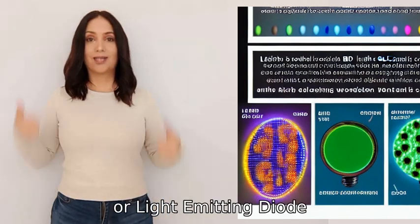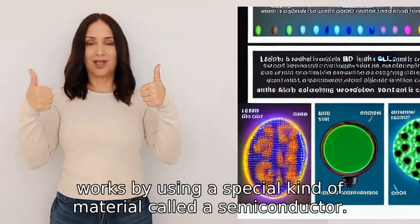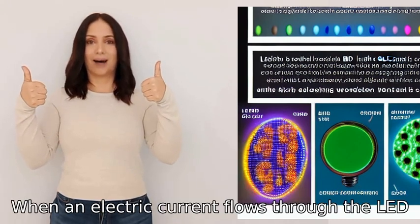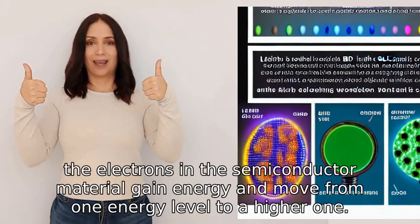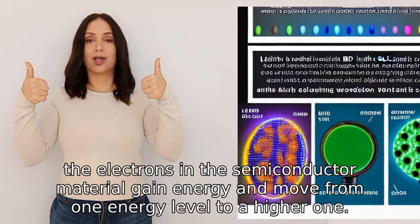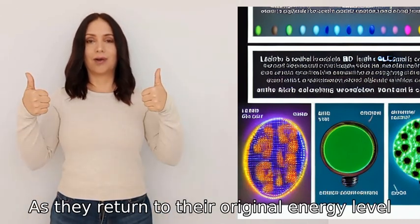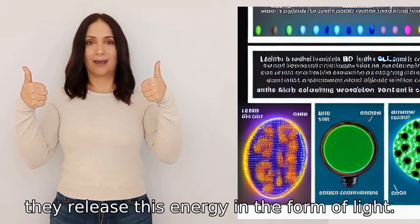An LED, or light emitting diode, works by using a special kind of material called a semiconductor. When an electric current flows through the LED, the electrons in the semiconductor material gain energy and move from one energy level to a higher one. As they return to their original energy level, they release this energy in the form of light.